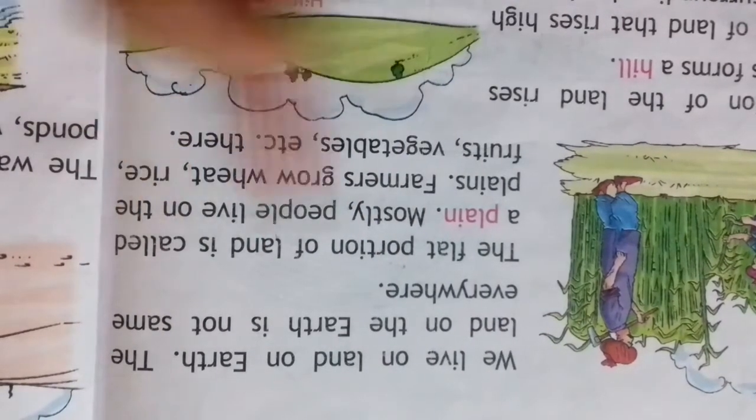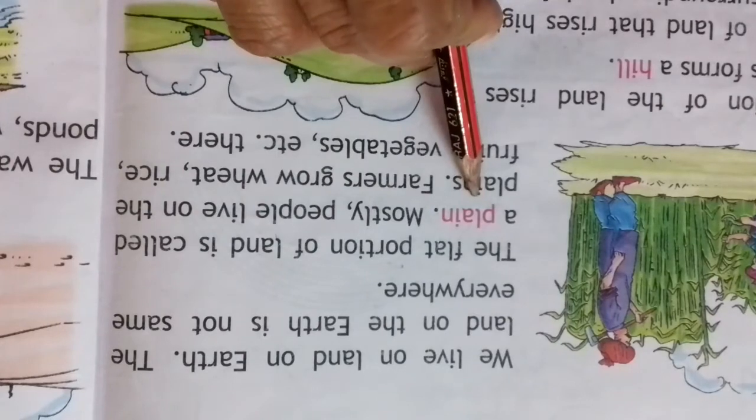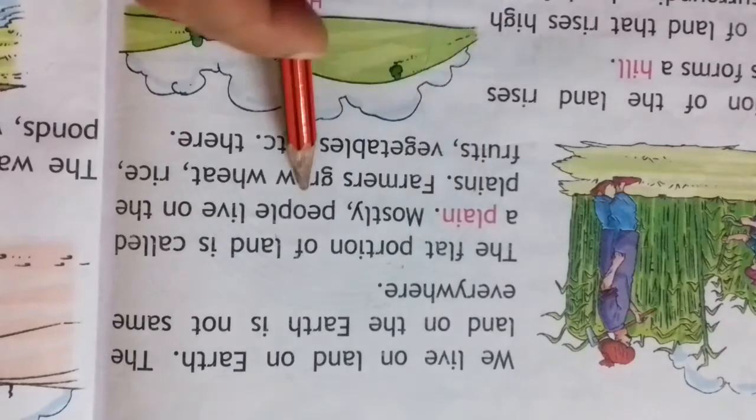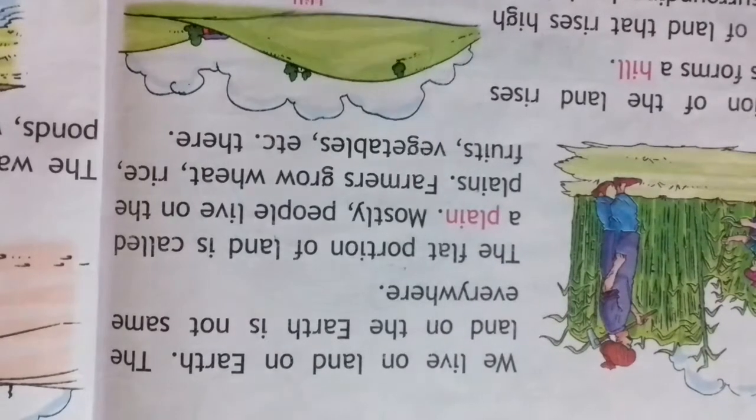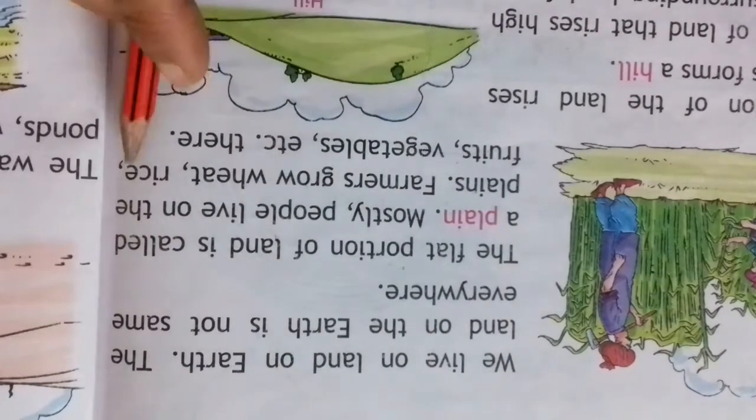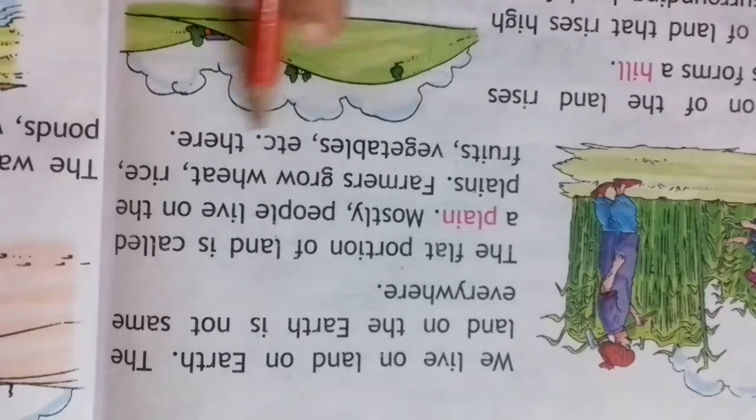The flat portion of land is called a plain. We live on plains. Farmers grow wheat, rice, fruits, vegetables, etc. on plains.